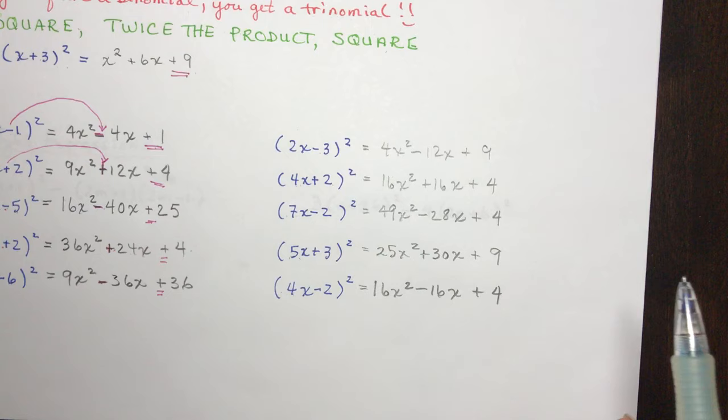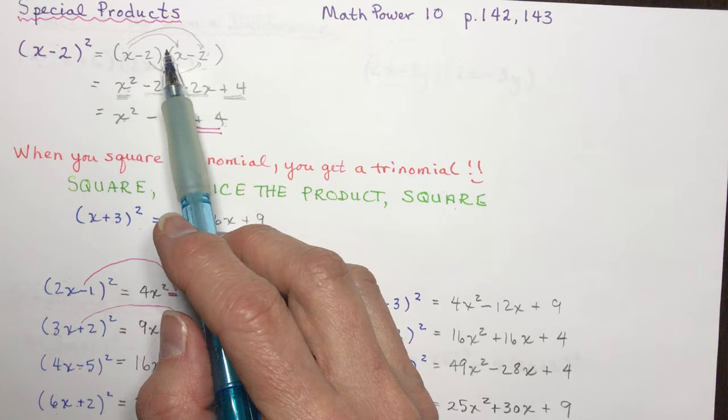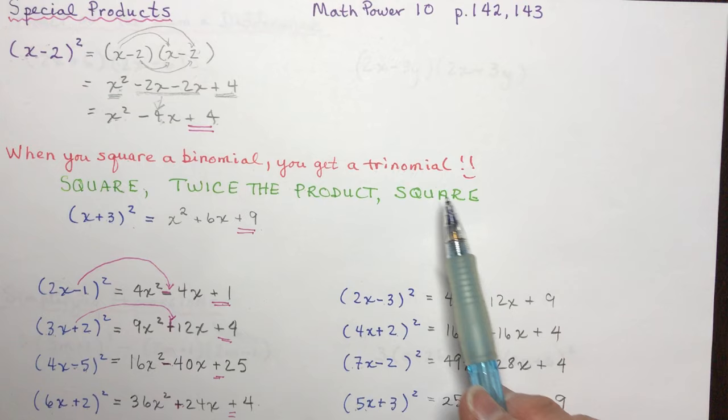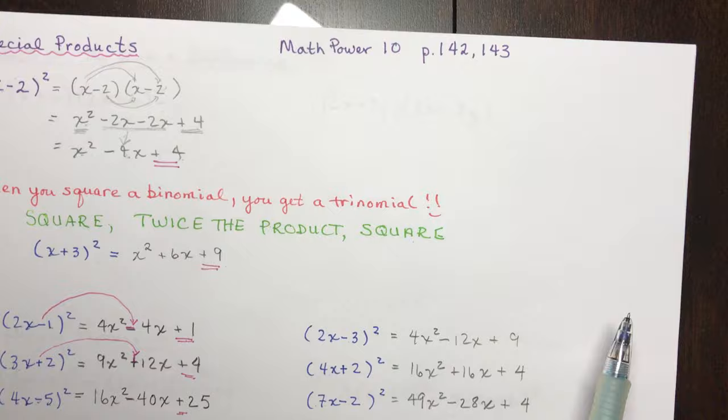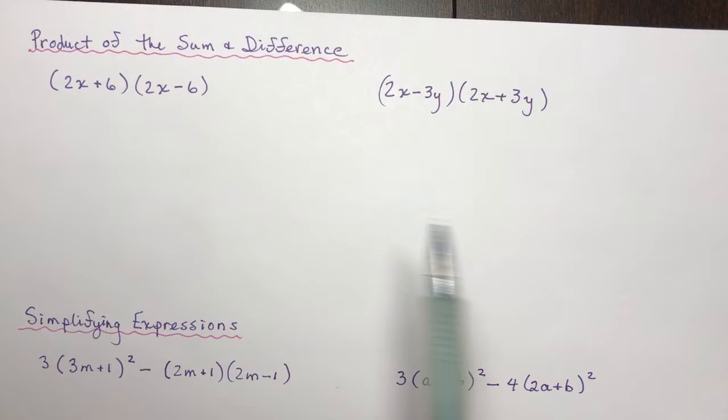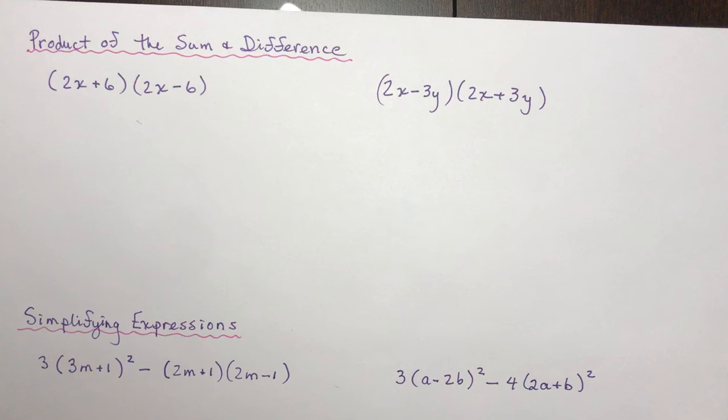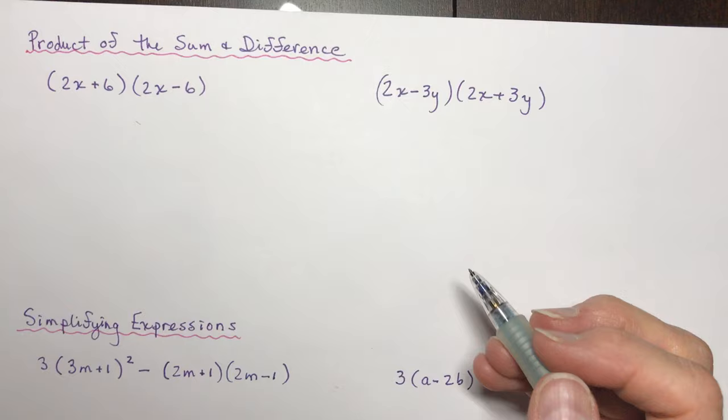You don't need to expand it the long way. That's just the pattern when you're squaring a binomial — remember square, twice the product, square. I've also put some homework here from Math Power 10; I'll leave the link so you can go to those pages for more practice. Now, the product of the sum and difference — this is a pattern you want to be able to spot during expansions because it'll save you time.